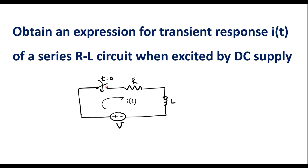When the switch is closed at t equal to zero, current will start flowing into the circuit. We have to find the expression for i(t). Here we will assume that the initial current in the circuit is zero. Let me apply KVL to this circuit first.